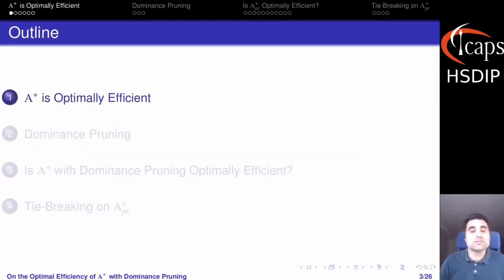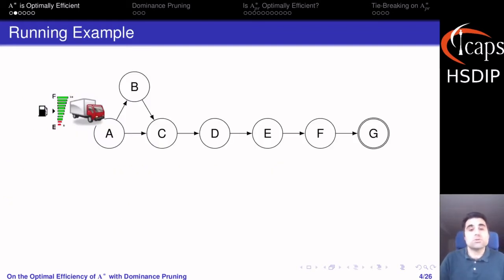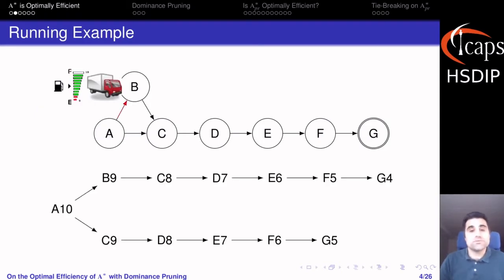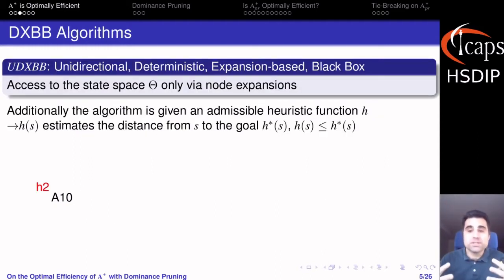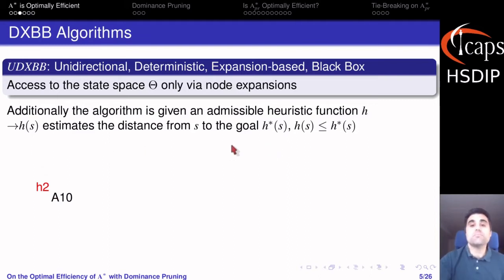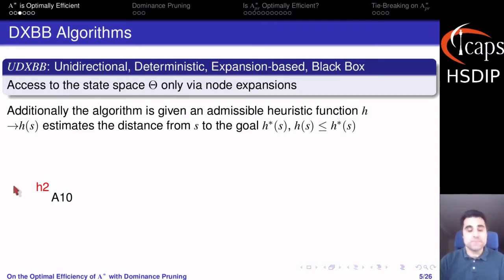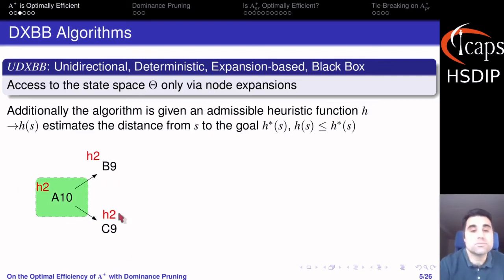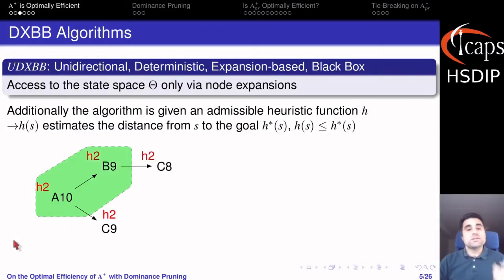Now let's start discussing why A-star is optimally efficient. We are going to use this example where a truck has to go from A to G, and every time it moves it consumes one unit of fuel. Here below you can see the state space of this task. The general class of algorithms we consider are those that do forward search in an expansion-based manner. At the beginning the algorithms only know about the start state and the heuristic value, where the heuristic is a function that returns a lower bound on goal distance from any state. The algorithm obtains more information by expanding nodes, generating successors, and computing heuristic values, continuing until finding an optimal solution. What we want is an algorithm that does this by performing the minimum number of expansions.